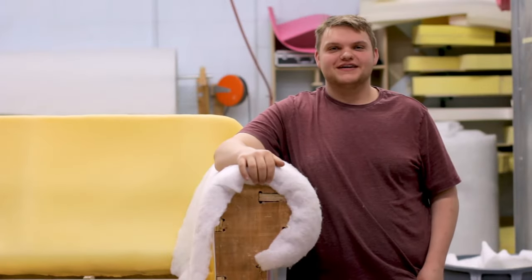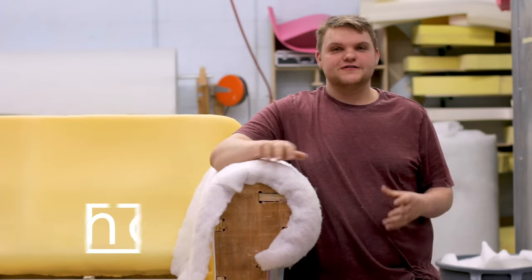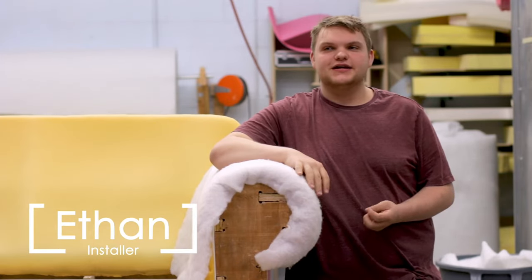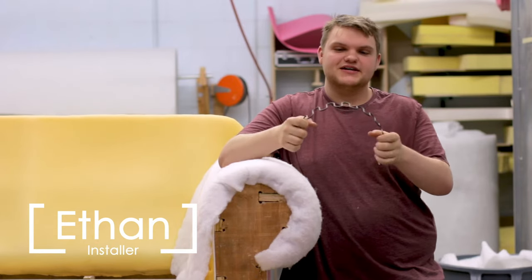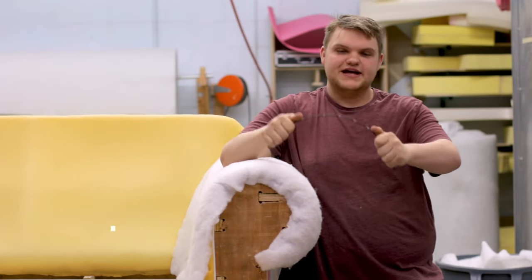Alright guys, the method we're going over today is our no-sag spring method. Generally for our seat sections, we tend to use 8-gauge springs. It's used for seats mainly because it's able to bend more without snapping.